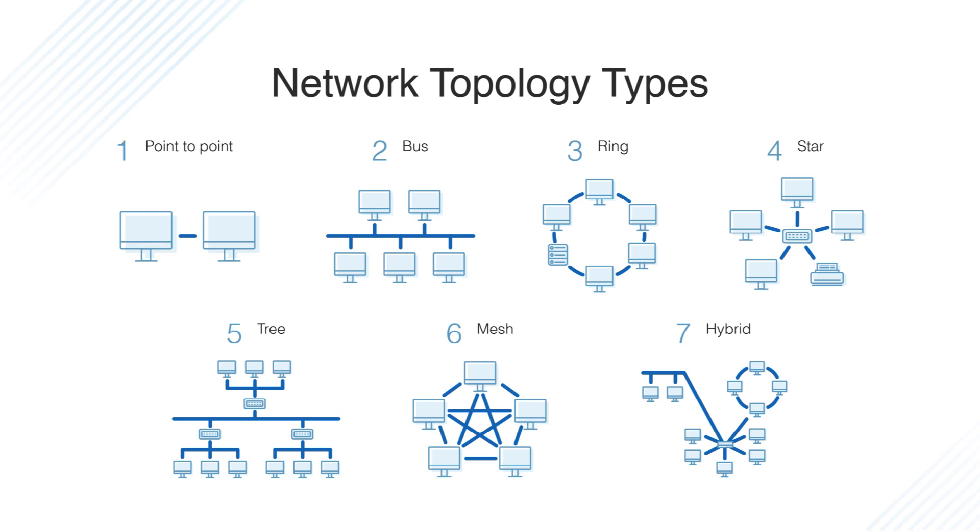The structure we call topology is actually the structure that determines how computers in the network are placed. This concept is generally divided into two groups: physical topology, which determines how the network will physically look, and logical topology, which determines how data flows on the network. In addition to topology groups, there are also topology types. Among these, we will examine the four most commonly used topologies.